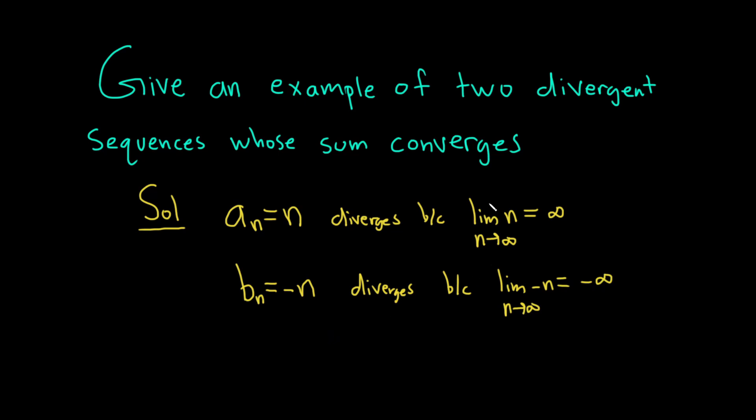Remember, for a sequence to converge, when you take the limit as n approaches infinity, you have to get a real number. If you don't get a real number, then the sequence diverges.